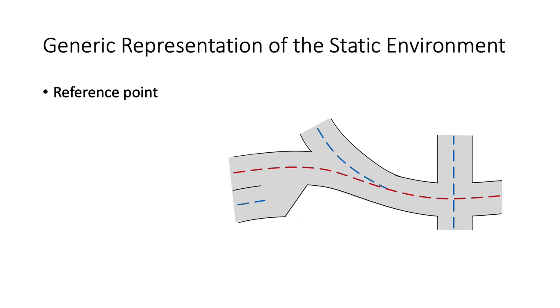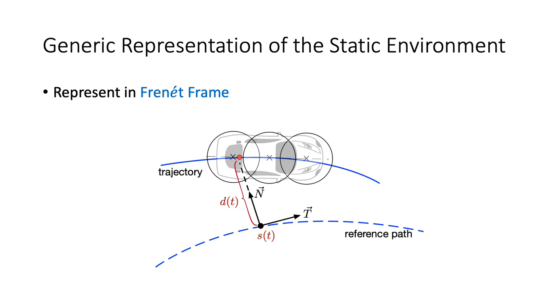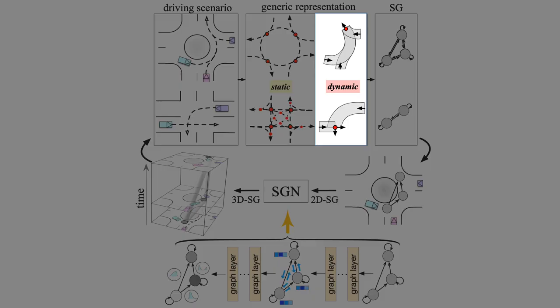Upon each reference path, we further introduce the concept of reference point, which can be either used to represent different topological elements, including undecided overlap, line overlap, and point overlap, or to represent regulatory elements such as traffic lights and traffic signs. For generalization purpose, we utilize the Frenet frame instead of Cartesian coordinate to represent the environment.